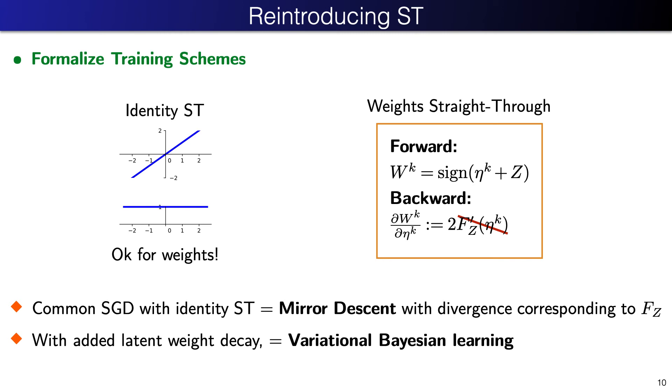Lastly, we formalize training schemes. It turns out that the identity straight-through is good for weights. If we consider a mirror descent instead of gradient descent, it is always possible to choose the divergence functions such that the noise density cancels. Roughly speaking, one can imagine that the parameter space is locally stretched or compressed so as to cancel this extra term. We formally show that simple learning rules correspond to sound learning methods. So, common SGD with identity straight-through corresponds to stochastic mirror descent. If we add latent weight decay and assume logistic noises for binary weights, it corresponds then to variational Bayesian learning.